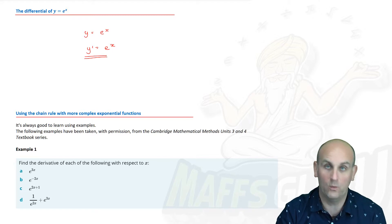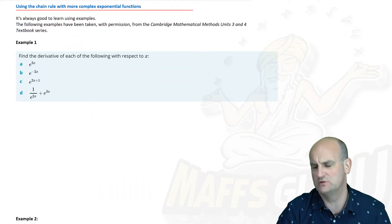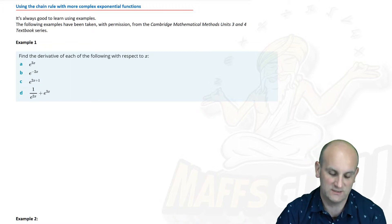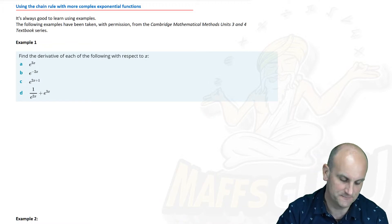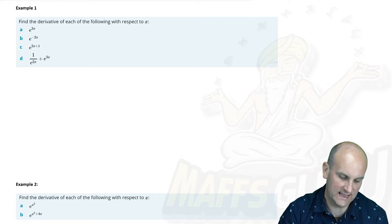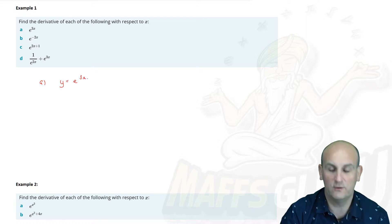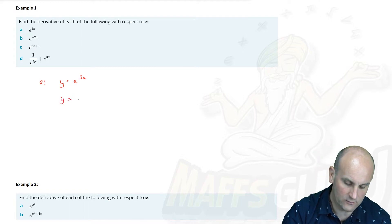So how does that now work with the chain rule and stuff? Well these questions fabulously have been extracted from the Cambridge Mathematical Methods Units 3 and 4 textbook. Thank you Cambridge for allowing me to use them. So let's use some examples with some chain rule and see if there's another shortcut to be able to do this. So here is example one. Find the derivative of each of the following with respect to x. So what that's really saying is just differentiate it with respect to x. So for that first example for part a I have y was equal to e^(3x).